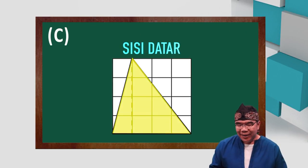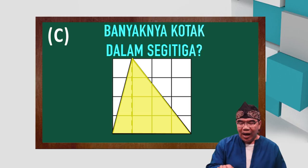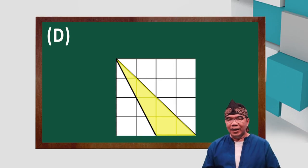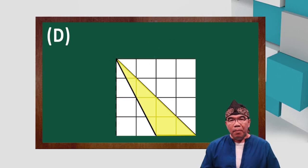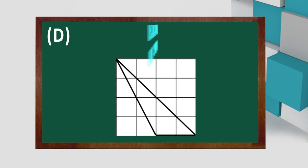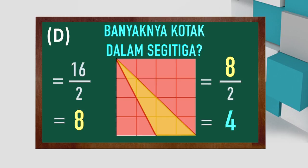Sekarang perhatikan gambar C. Sisi datarnya 4, tingginya 4. Banyaknya kotak yang ada dalam segitiga ini adalah 16 dibagi 2, atau 8. Sekarang perhatikan yang D. Di sini 8 buah dibagi 2, berarti ada 4. Sehingga banyaknya kotak dalam segitiga D adalah 4 buah.